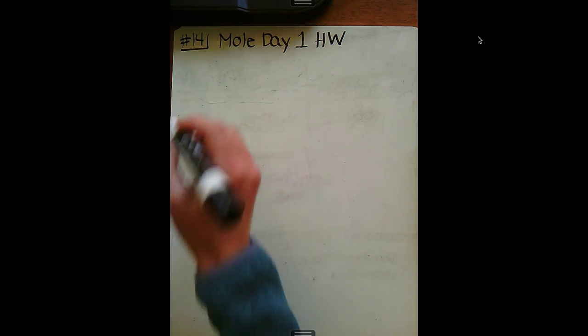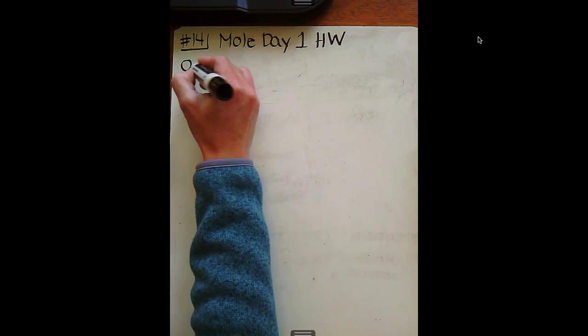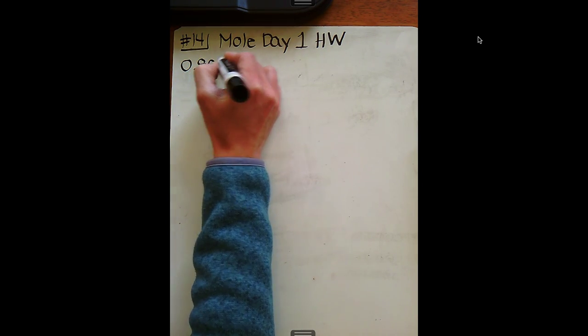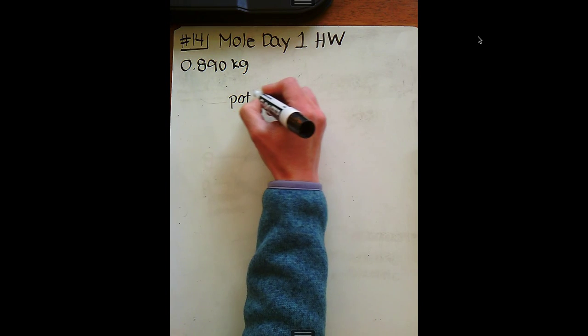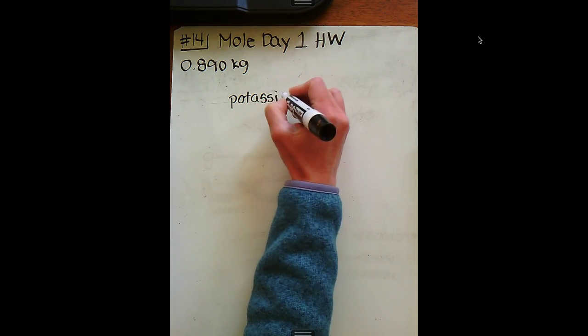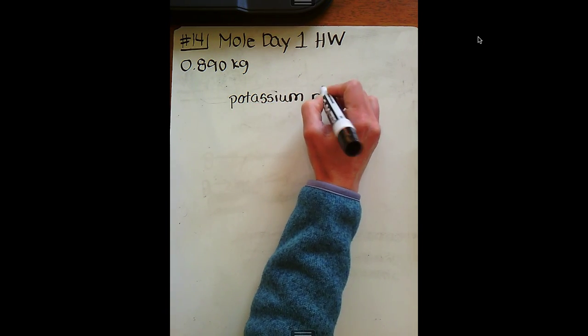Let's first start by writing down 0.890 kilograms, and then notice that it says potassium nitrate. So you're thinking, oh great, I've got to do some naming, and you would be correct. So let's kind of break this down.